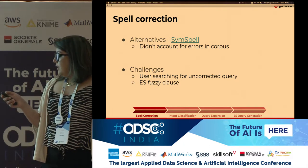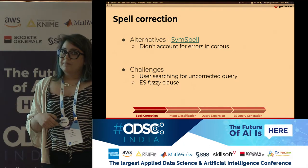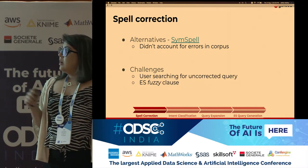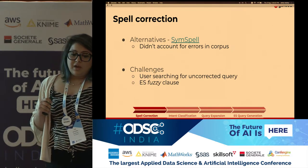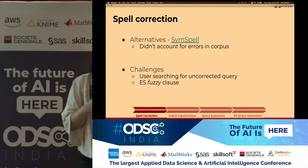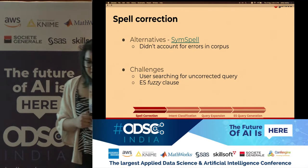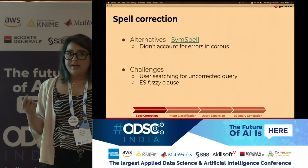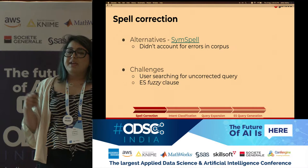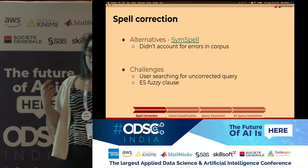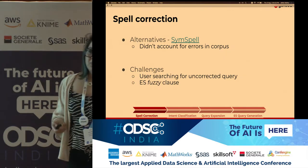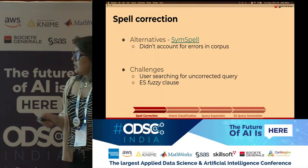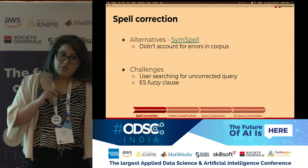One alternative we considered but chose not to use was a library called SymSpell. It is extremely fast, but it does not account for errors in the corpus. Many of our restaurant names and dish names are misspelled, so if someone typed a misspelled query and that misspelling already existed as a dish name in the corpus, SymSpell would not correct it — which is not what we wanted. That is why we chose a frequency-based approach that accounts for term frequency.